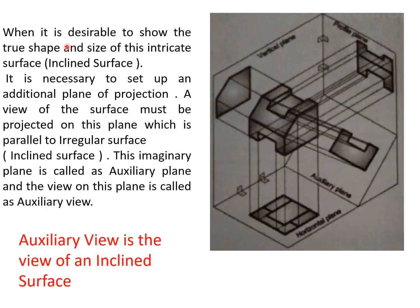When it is desirable to show the true shape and size of this inclined surface, it is necessary to set up an additional plane of projection. A view of the surface must be projected on this plane, which is parallel to the irregular or inclined surface. This imaginary plane is called an auxiliary plane, and a view on this plane is called an auxiliary view.